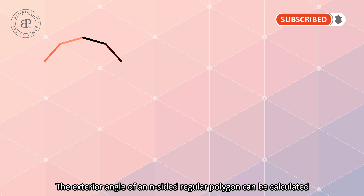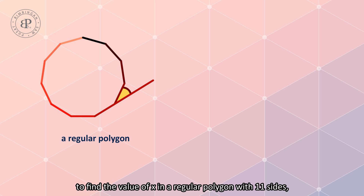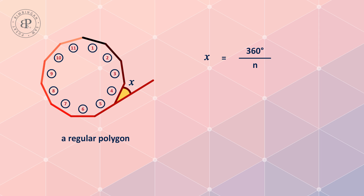The exterior angle of an n-sided regular polygon can be calculated using the formula 360 over n. For example, to find the value of x in a regular polygon with 11 sides, we use the formula 360 over n, where x equals 360 over 11. Thus, x equals 32.73 degrees.